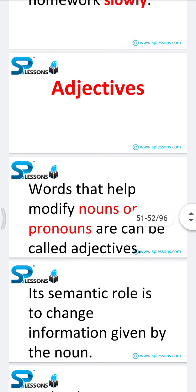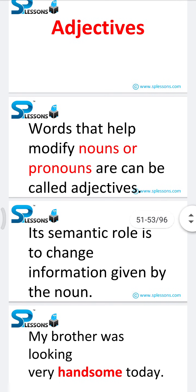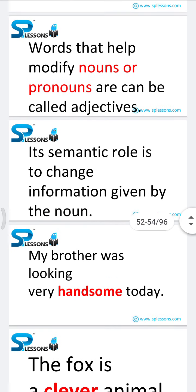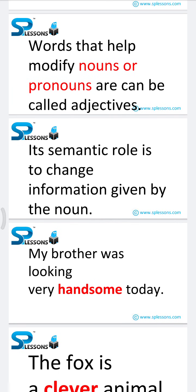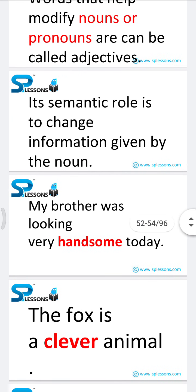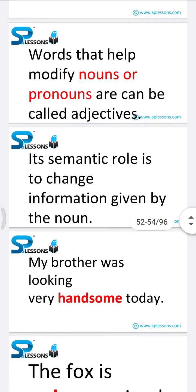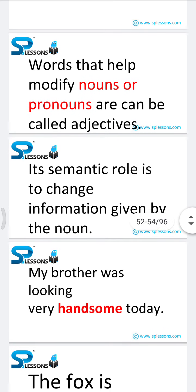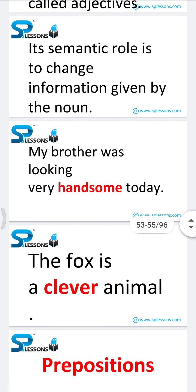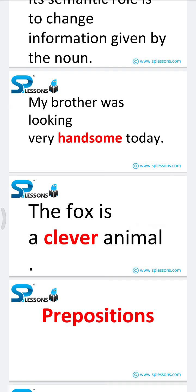Next is adjectives. Words that help modify nouns or pronouns are called adjectives. Their semantic role is to change information given by the noun. 'My brother was looking very handsome today' — here 'handsome' is an adjective. 'The fox is a clever animal' — here we are describing the nature of the animal, so 'clever' is an adjective.